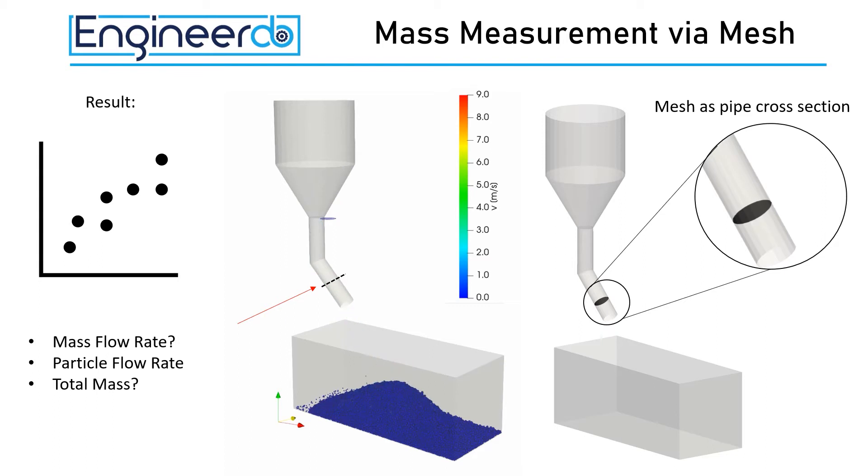The advantage of this method is that you don't have to define a region which can be challenging in more complex cases. Furthermore, you get additional information of the total mass and particles passed and the actual flow rates.